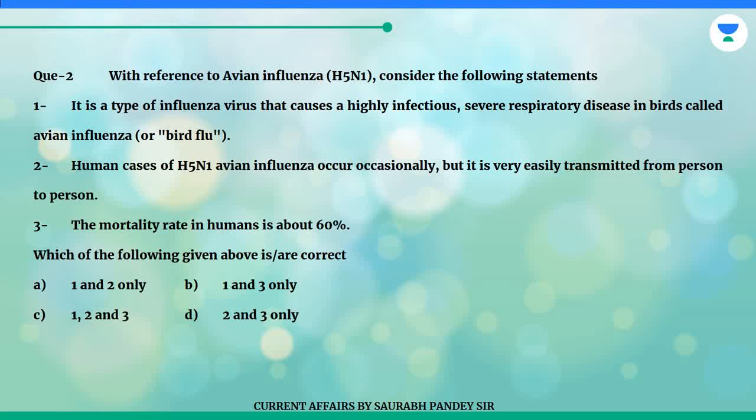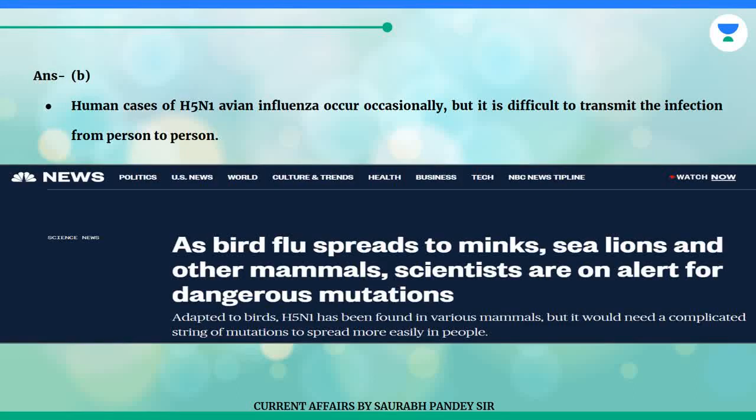Which of the following given above is correct? A. 1 and 2 only. B. 1 and 3 only. C. 1, 2 and 3. D. 2 and 3 only. The answer is B. Human cases of H5N1 avian influenza occur occasionally but it is difficult to transmit the infection from person to person.